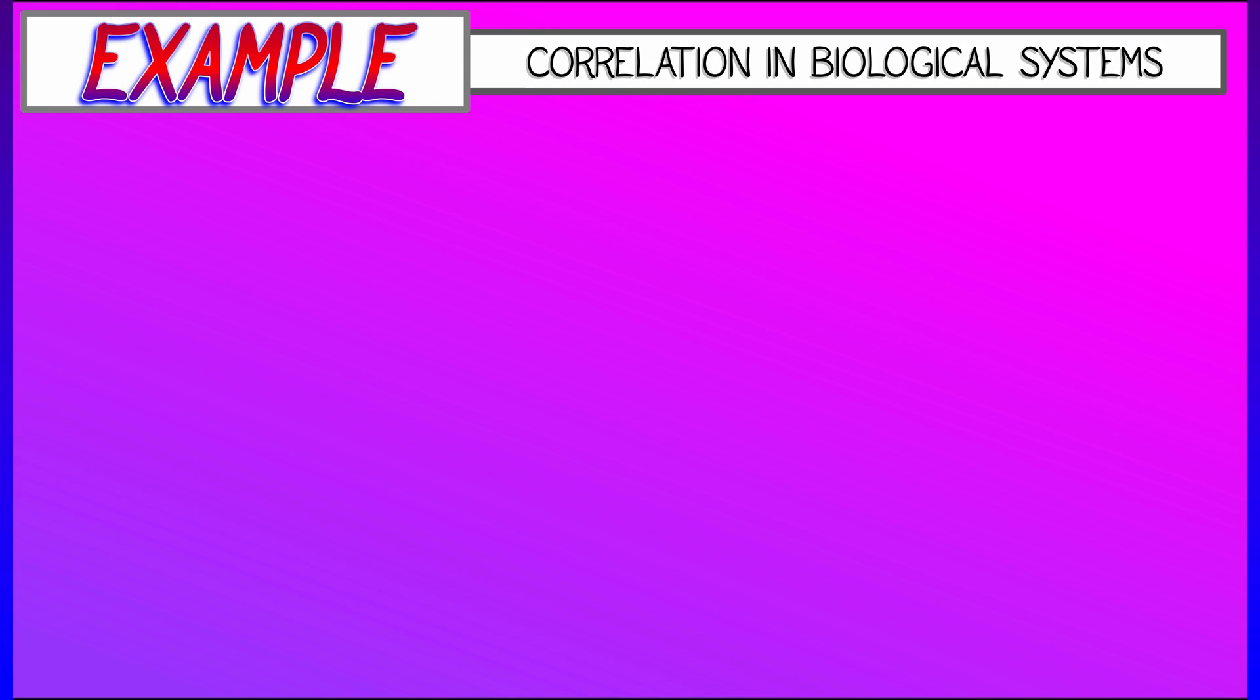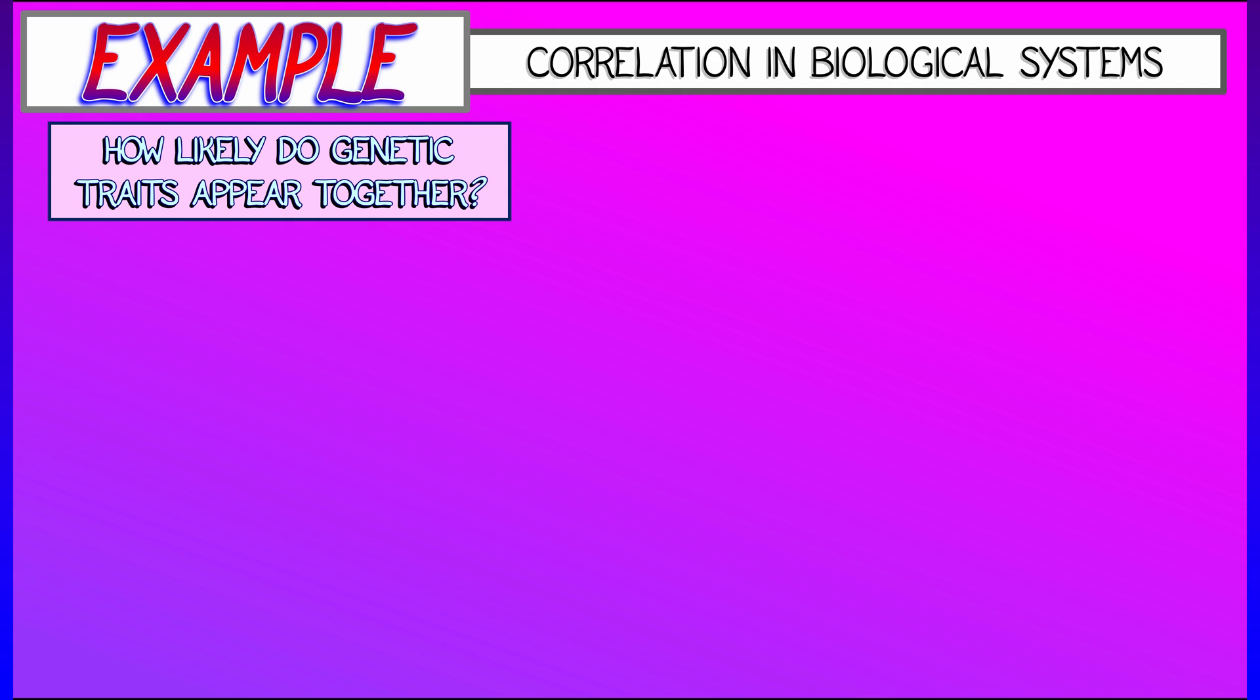Correlations in biological systems give another great example of matrices. Let's say you have a number of genetic traits, and you want to keep track of how likely it is that they appear together.